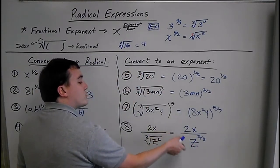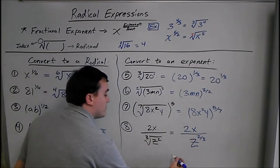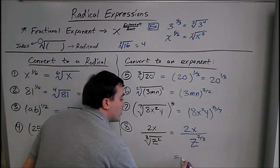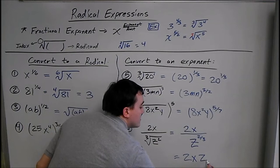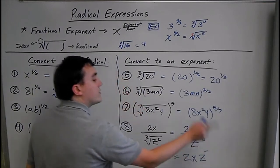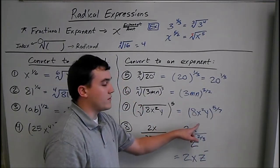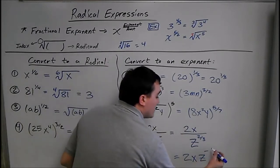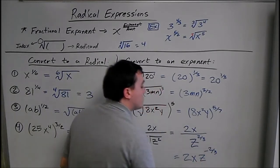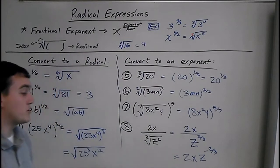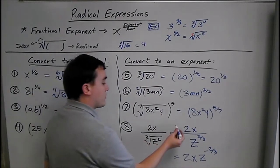Another way you could write that is to move the z up top. So you could say 2x times z to the negative 2 thirds. Whenever you flip an exponent, you make it negative. Usually you flip it to make it positive, but this also works — just to show you what else you can do with it. But this would be the preferred answer.